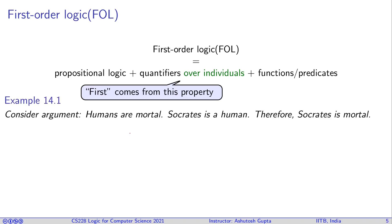Remember we had an argument: humans are mortal, Socrates is a human, therefore Socrates is mortal. This argument is not expressible in propositional logic, therefore you need an extension, and that extension is called first-order logic.